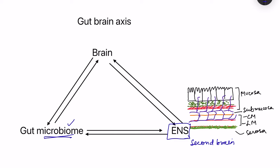The gastrointestinal tract has a network of neurons known as the enteric nervous system, which is solely responsible for gastric motility, gastric secretion, and regulation of gastric blood flow. Even if its connections with higher centers are removed, it can still work on its own. However, higher centers influence the activity of the enteric nervous system in case of environmental stresses, and the brain can override reflexes happening within the enteric nervous system.